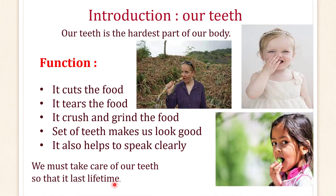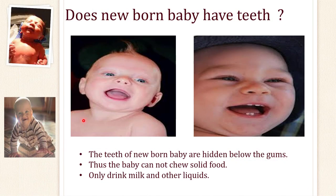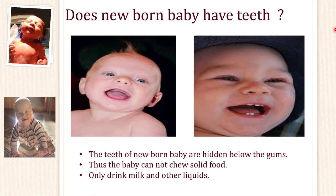Have you ever thought — does a newborn baby have teeth? As you can see in this image, teeth of a newborn baby cannot be seen. But in another image, we can see a few teeth of the baby. The teeth of newborn babies are hidden below the gums, because of which they cannot chew solid foods — they can only drink milk or other liquids. Do you know when the teeth start coming out of the gums? Let's understand from the next slide.